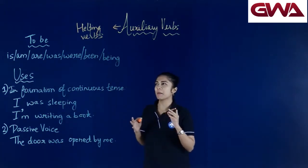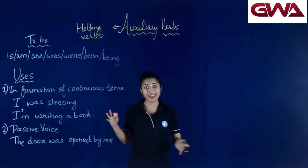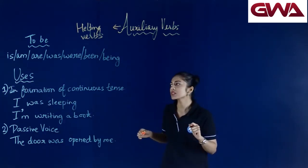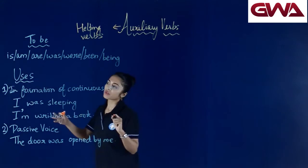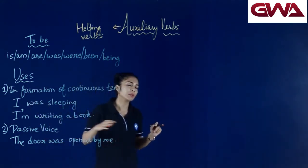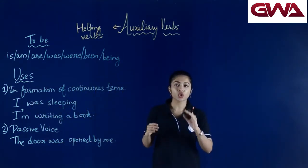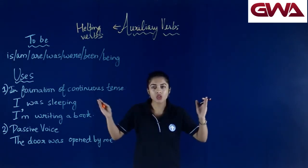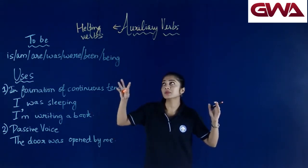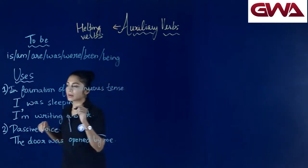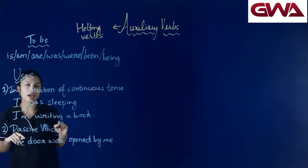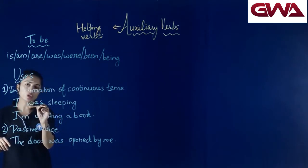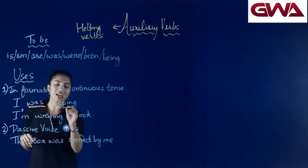To be verbs हैं: is, am, are, was, were, been, being — ये सारे जो verbs हैं वो हैं हमारे to be auxiliary verbs। इनका use है कि जभी हम continuous tense form करते हैं, उसे construct करने में auxiliary verbs हमें help करते हैं। तो देखते हैं first sentence: I was sleeping. I was is an auxiliary verb and sleeping is our main verb.